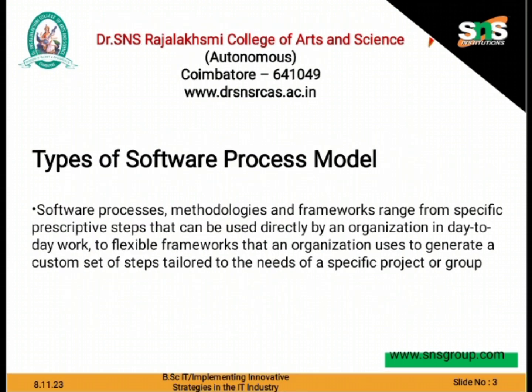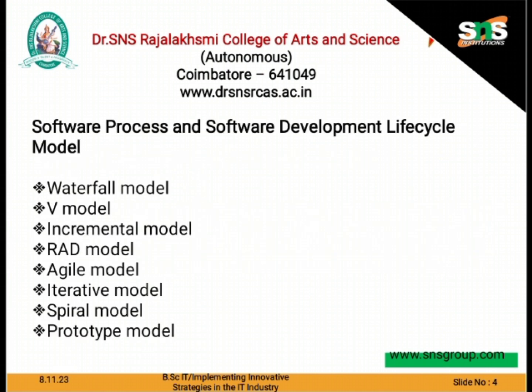Types of Software Process Models. This includes various types of models. Based on our customer perspective, we can choose any of the models. The list of models are: waterfall model, V model, incremental model, RAD model, agile model, iterative model, spiral model, and prototyping model. These are the available software development models and we can choose any of them.